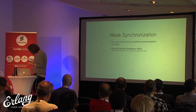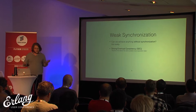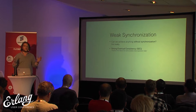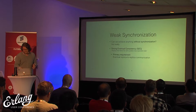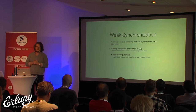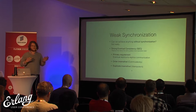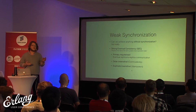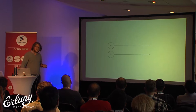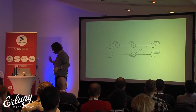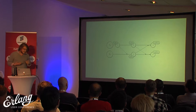Strong eventual consistency is a correctness criteria that says, regardless of ordering, as long as all replicas observe all the updates in the system, you'll get the same result — regardless of reordering, replay, or network anomalies. The only requirement to build a system with SEC is replica-to-replica communication, so you transitively deliver all updates to everybody. This property can tolerate reordering and duplication of messages, which is great for unreliable networks and event replay.